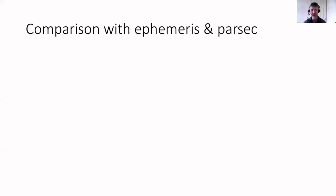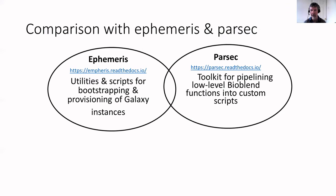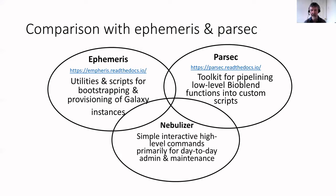Nebulizer is one of a number of BioBlend-based utilities for managing Galaxy instances. Others include Ephemeris, which provides utilities and scripts for bootstrapping and provisioning Galaxy instances, and Parsec, which is a toolkit for pipelining together low-level BioBlend functions into custom scripts. Nebulizer has some overlap with both of these packages but differs in that it provides a simple interactive high-level set of commands primarily aimed at day-to-day admin and maintenance of Galaxy instances.